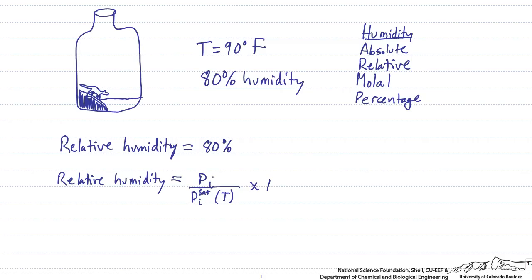And so the saturation pressure, we remember, is the pressure where vapor will begin to condense. So at 100% relative humidity, water will just begin to come out of the air.